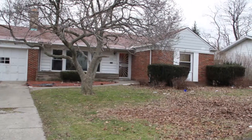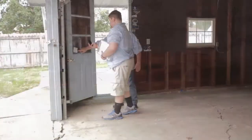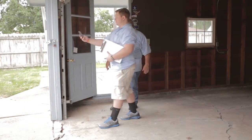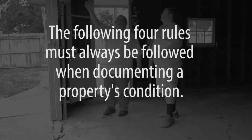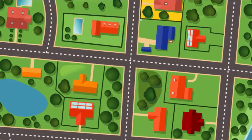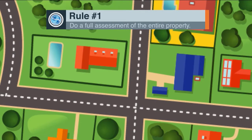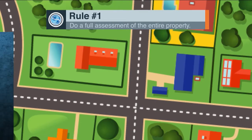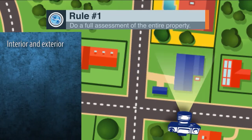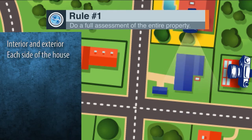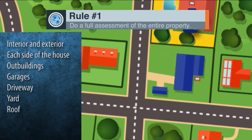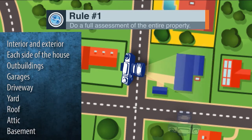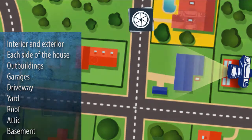Properly assessing the condition of a property is important, but it is equally important to provide photo documentation of your findings. The following four rules must always be followed when documenting a property's condition. Rule number one: do a full and comprehensive assessment of the entire property utilizing photos to show all aspects of the interior and exterior, including each side of the house, outbuildings, garages, the driveway, yard, roof, attic, and basement. This must be performed on every visit regardless of the specific type of work order.